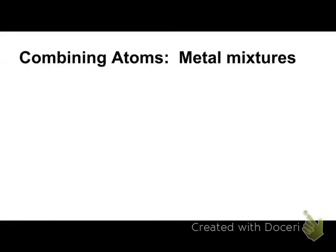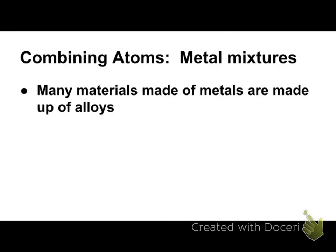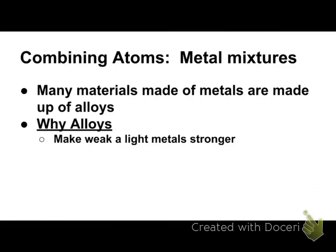Here are some of the different alloys we want to look at. Many materials made of metals are made up of alloys. Why alloys? They make weak and light metals stronger. If you have a metal like aluminum that's pretty weak and malleable, you can mix it with a stronger metal to make it less corrosive and stronger.